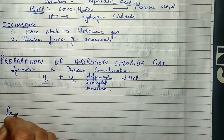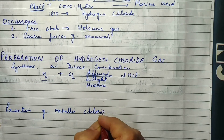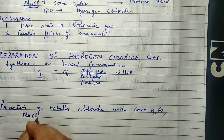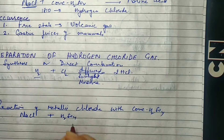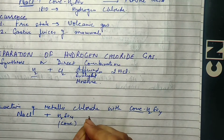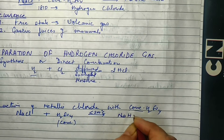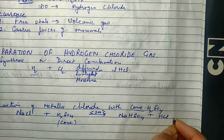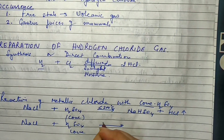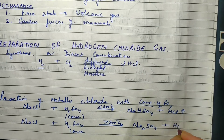The second method of preparation is by the reaction of a metallic chloride with concentrated sulfuric acid. For example, NaCl reacting with concentrated H₂SO₄ at a temperature less than 200°C will form sodium bisulfate (NaHSO₄) and HCl gas.